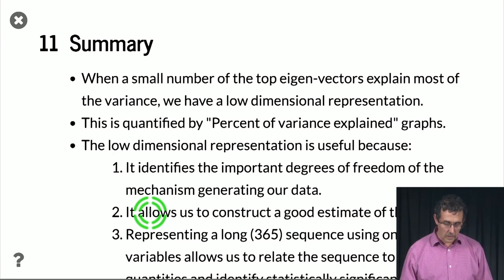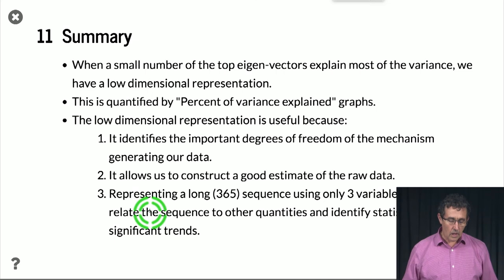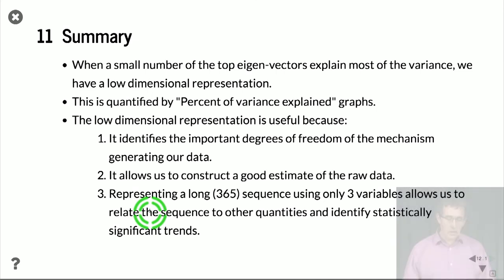So to summarize, when we have a small number of top eigenvectors that explain most of the variance, then we are inherently getting a low dimensional representation. And this is quantified by the percentage of variance explained graphs. The low dimensional representation is extremely useful.